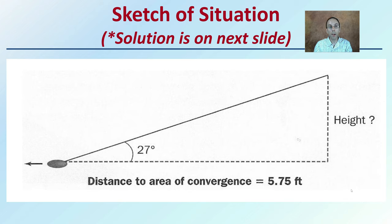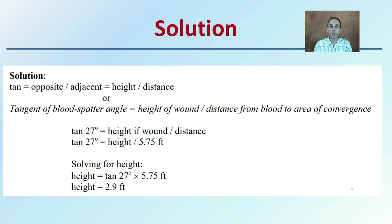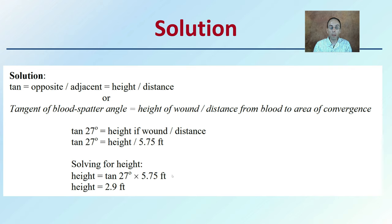If you weren't thinking this way, you might want to go back and recalculate — here comes the answer. The basic solution is: tangent equals the opposite divided by the adjacent, which equals the height over the distance. We have our 27-degree angle and our adjacent side of 5.75 feet. Therefore, solving for height: tan(27°) × 5.75 feet = 2.9 feet. That is the height of the original blood source. If you didn't get that answer, go back through the diagram and recalculate, as this will help you apply this math to other crime scene situations.